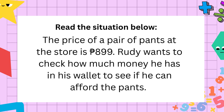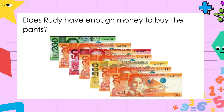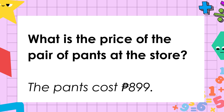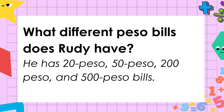Let's read the situation below. The price of a pair of pants at the store is 899 pesos. Rudy wants to check how much money he has in his wallet to see if he can afford the pants. Here is Rudy's money. Class, does Rudy have enough money to buy the pants? What do you think? The pants cost 899 pesos. Rudy needs to check if he has enough money in his wallet to buy the pants. He has 20 peso, 50 peso, 200 peso, and 500 peso bills.